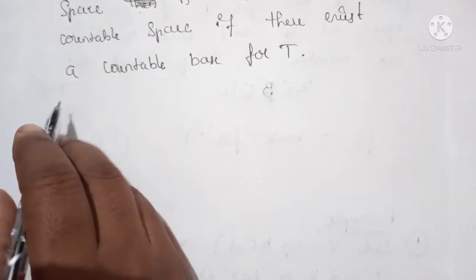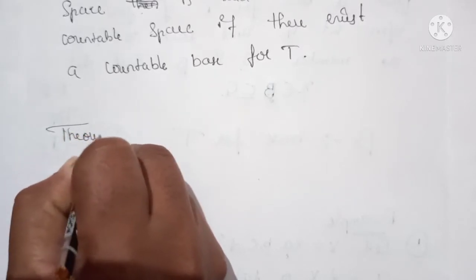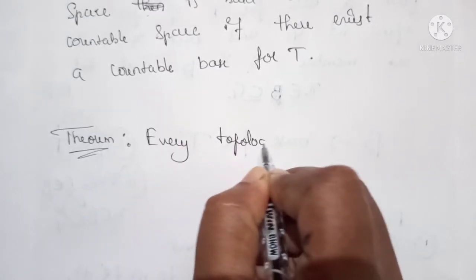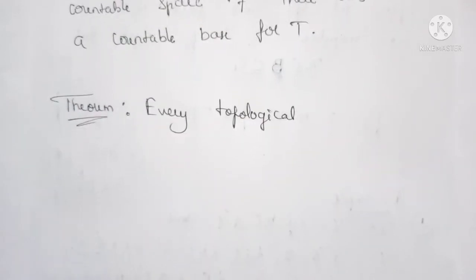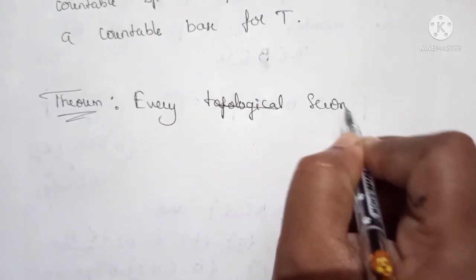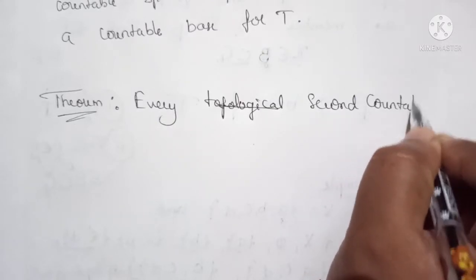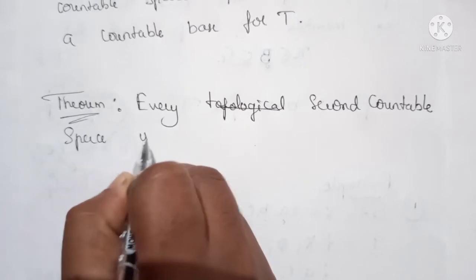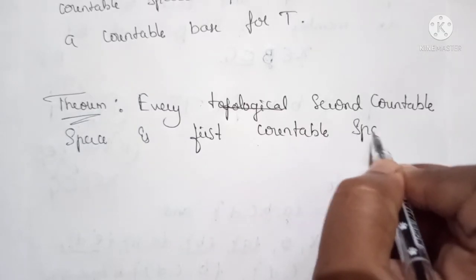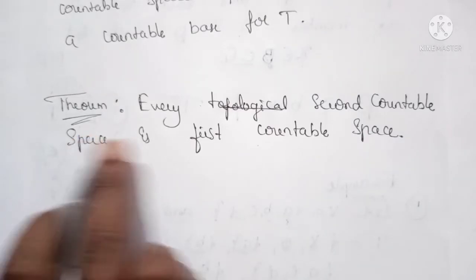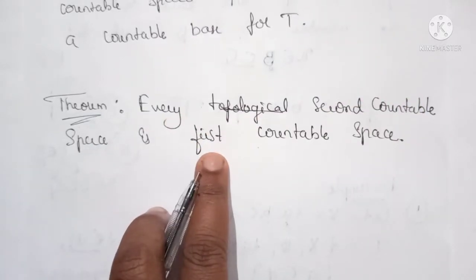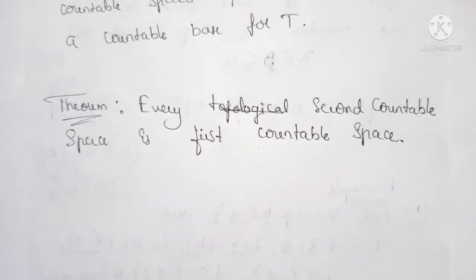Now we have a theorem: every second countable space is first countable. That means for every second countable space we have to show that there exists a local base.